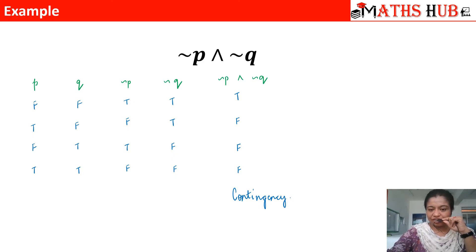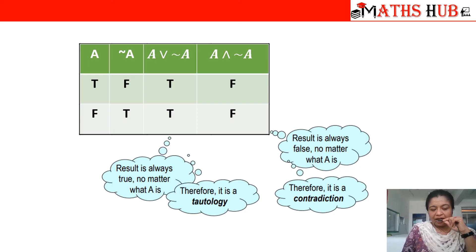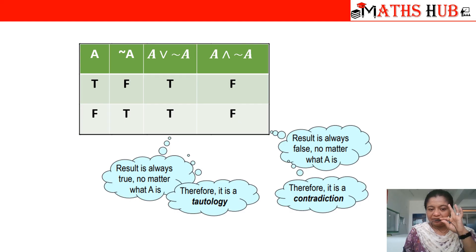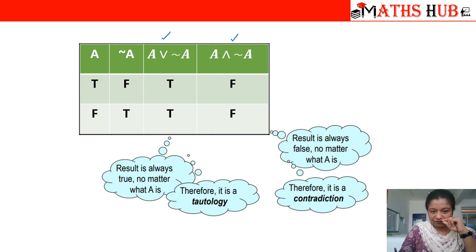Here in this example I have taken ¬a, a∨¬a, and a∧¬a. When the truth values of a are true and false, ¬a gives false and true respectively. a∨¬a gives both true results, and a∧¬a gives a false result. Looking at the a∨¬a column, no matter what a is, the compound proposition is always giving the value true — so this will be called a tautology. And for a∧¬a, irrespective of a, it is giving a false result — so this statement will be called a contradiction.